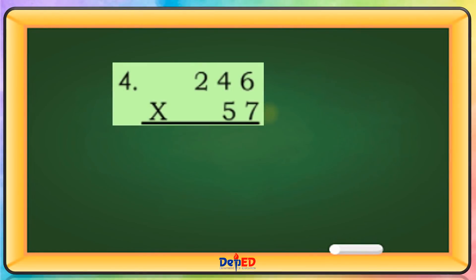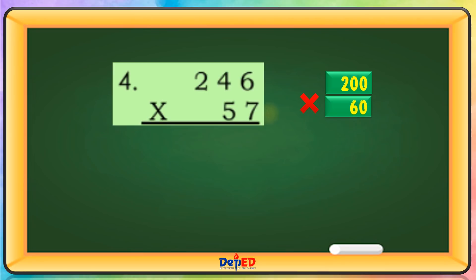246 will be rounded off to 200 and 57 will be rounded to 60. 200 times 60 equals — let's copy or write the three zeros. The estimated product is 12,000.